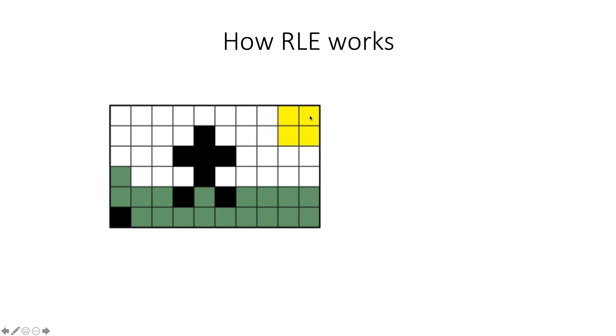If you count, you have eight white pixels and then two yellow pixels. And if we represent that, this is what it looks like: you have eight white pixels and you have two yellow pixels.